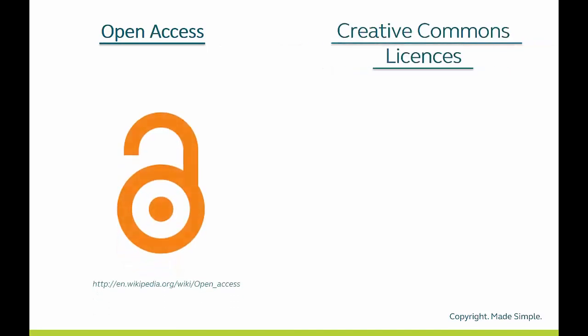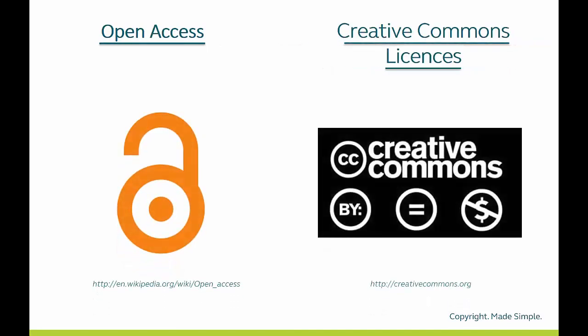In other cases, a creator can decide to make their work available as open access or under a Creative Commons license, which generally means that there is no need to seek permission to use the material. Whether you make copies under the exceptions to copyright or an open license, it is important to check the terms and conditions so you are sure that you understand what you can do with the material and for what purpose you are allowed to use it.